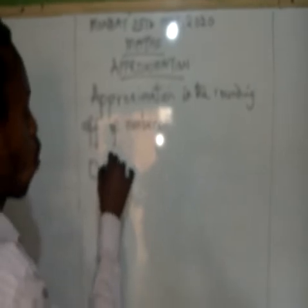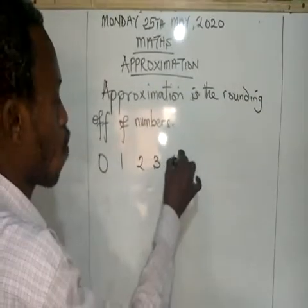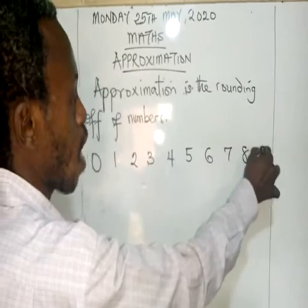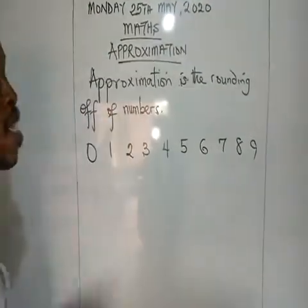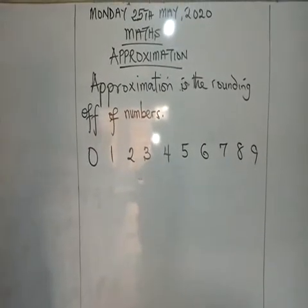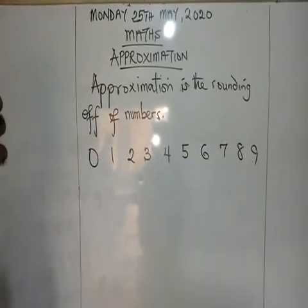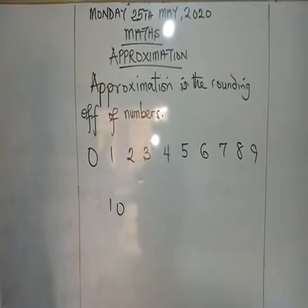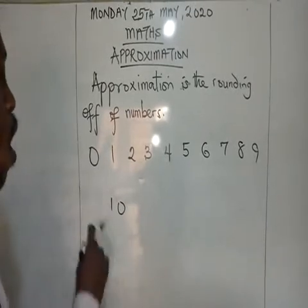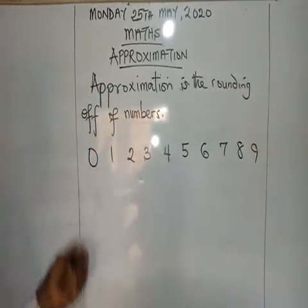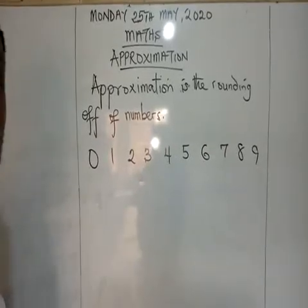In Mathematics, you all know that we have 10 digits ranging from 0, 1, 2, 3, 4, 5, 6, 7, 8, and 9. From these 10 digits you can form any number you wish to form. For example, if I pick 1 and 0, I will be able to form 10. I can decide to form a series of numbers out of these 10 digits.